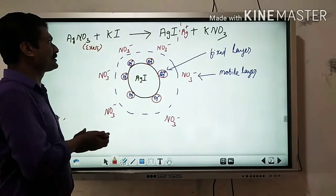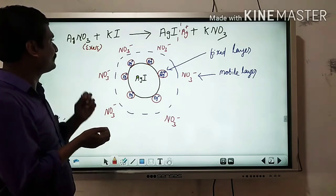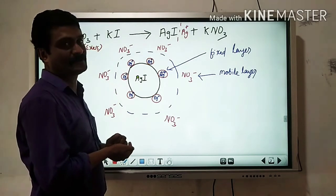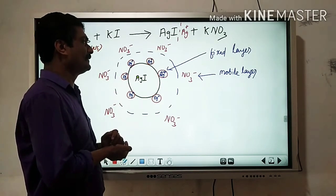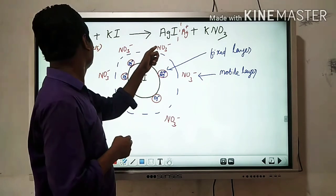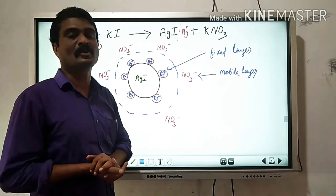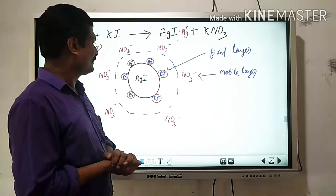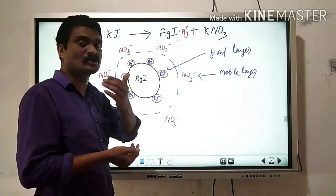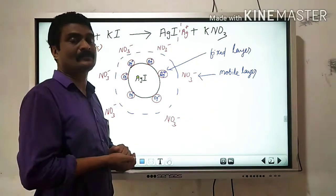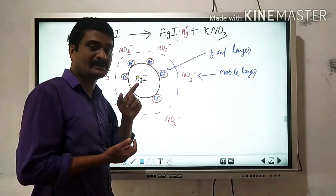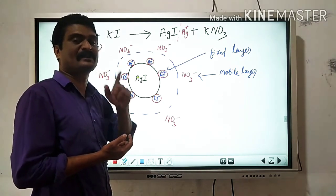When we add excess AgNO3 solution to KI solution, the AgI particles adsorb the Ag⁺ ion from the solution. The AgI particle becomes positively charged, the counter ion NO3⁻ remains in the dispersion medium, and the dispersion medium acquires negative charge. A particle adsorbing a common ion from the solution is called preferential adsorption.